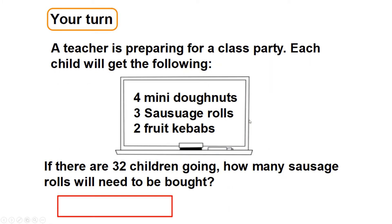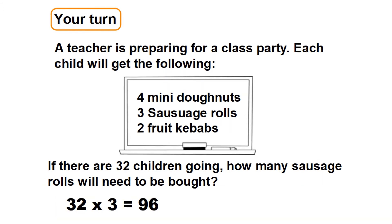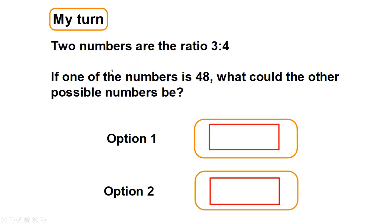Have a go at this one: a teacher is preparing for a class party. Each child will get four mini doughnuts, three sausage rolls, and two fruit kebabs. If there are 32 children going, how many sausage rolls will need to be bought? 32 children, they each get three sausage rolls — pause the video and work out the maths. The answer is 32 times three, which is 96 sausage rolls.